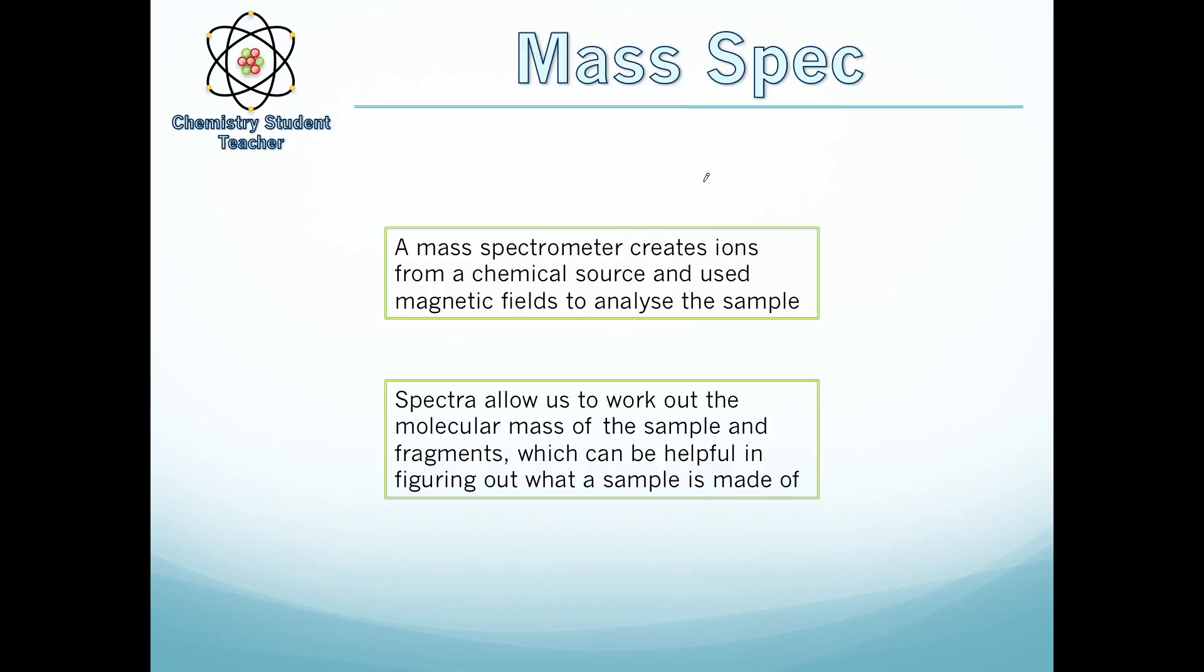So first of all, what is the point of mass spec? Well, the spectra that comes out of a mass spectrometer allows us to work out the molecular mass of a sample and the molecular mass of some fragments. And from this, pieced with other spectroscopy methods, we can work out a structure or start to work out a structure of a sample, an unknown sample.